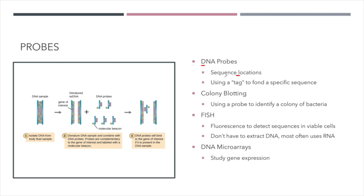In DNA probes, we're usually using a whole sequence and they're used to tag in order to find a specific sequence. Here on the left, I have a diagram of a DNA probe. Here's our DNA sample that we extracted from whatever organism — a bacterial cell. We heat up this DNA and denature it so it becomes single stranded.